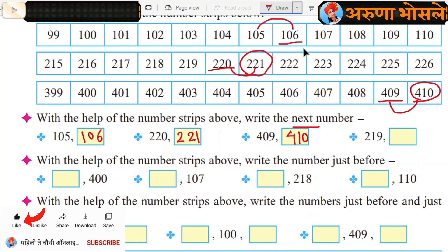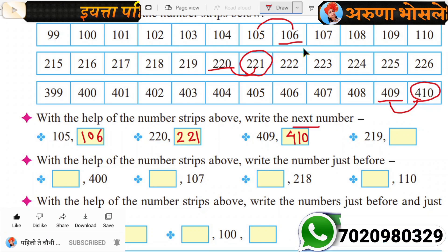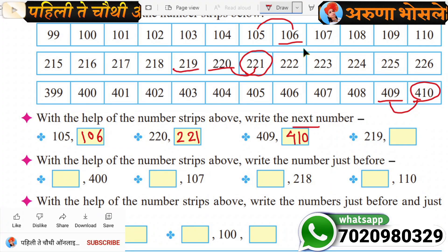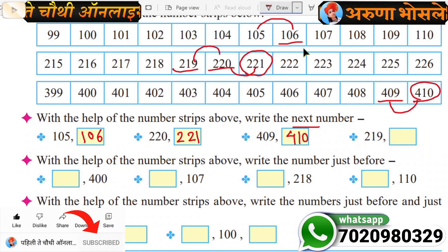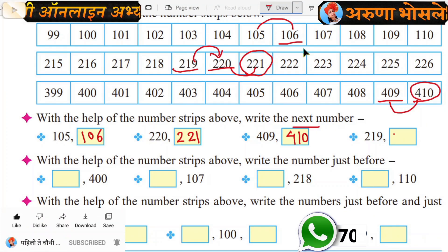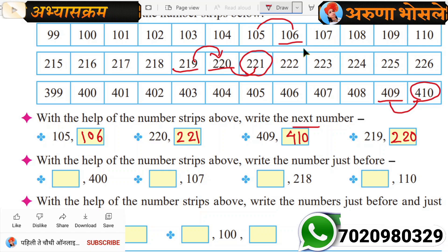Write here 410. 219 — where is 219? Here. Which number is next? Right here, 220. 221.